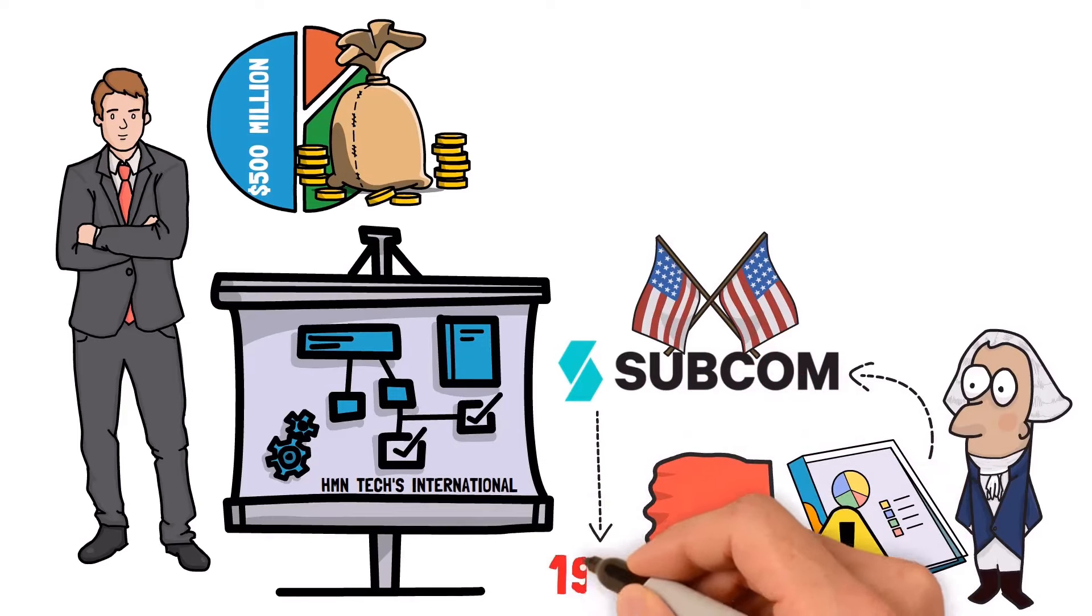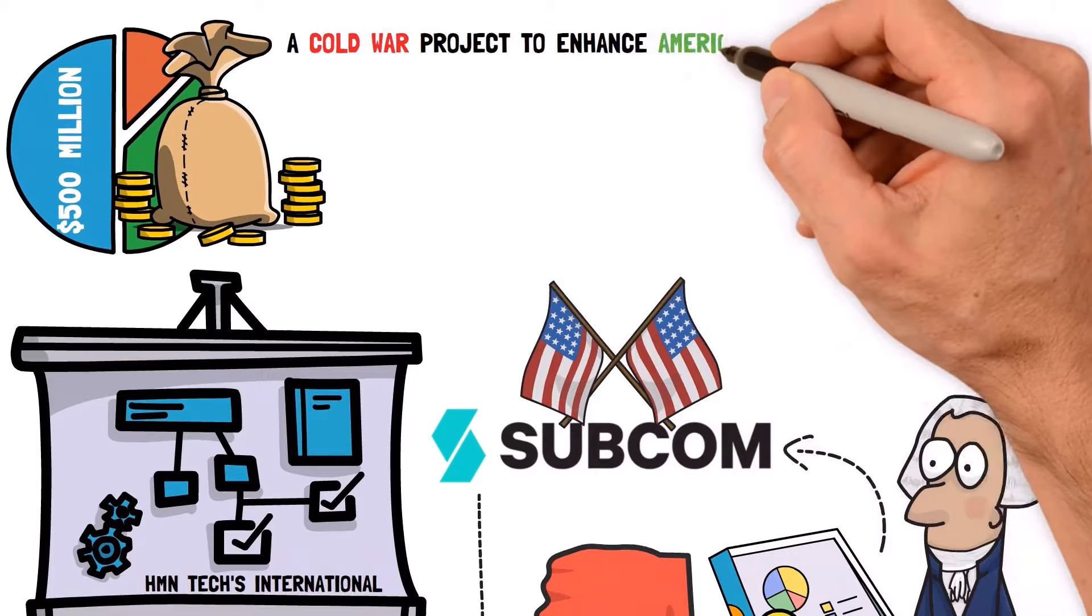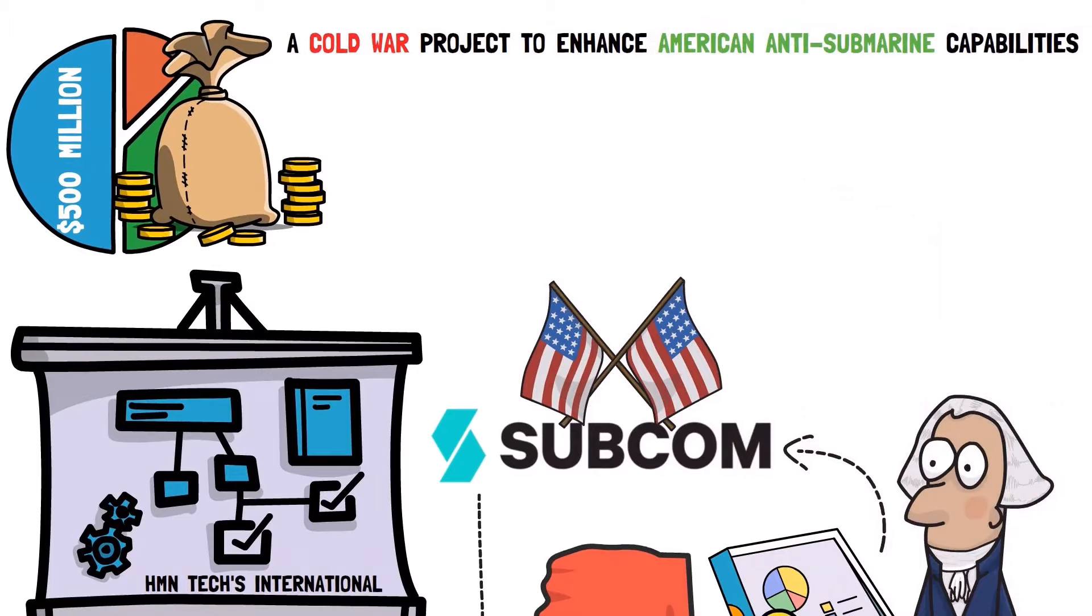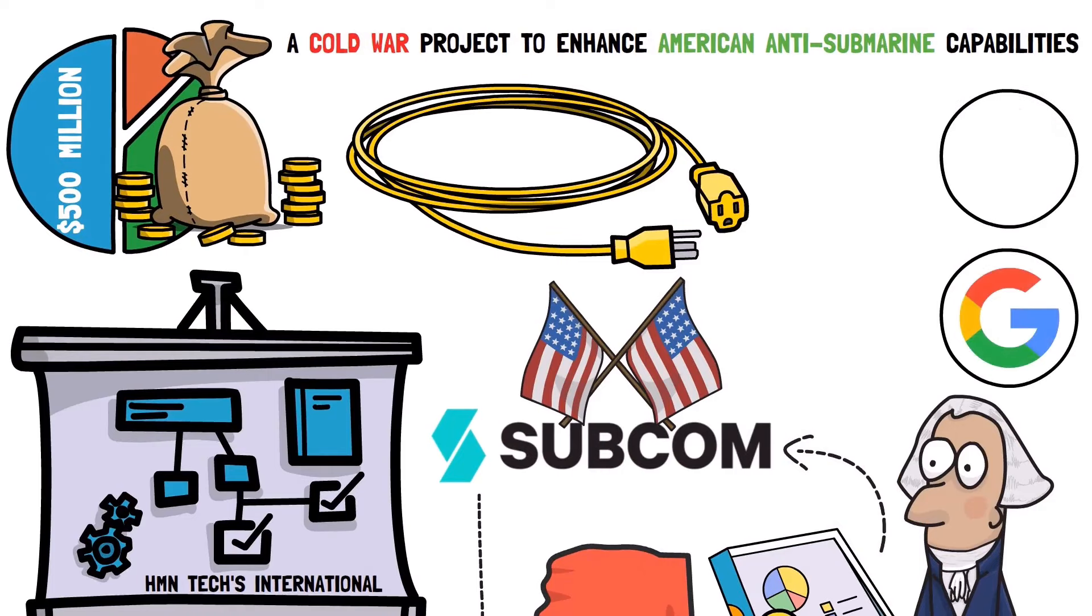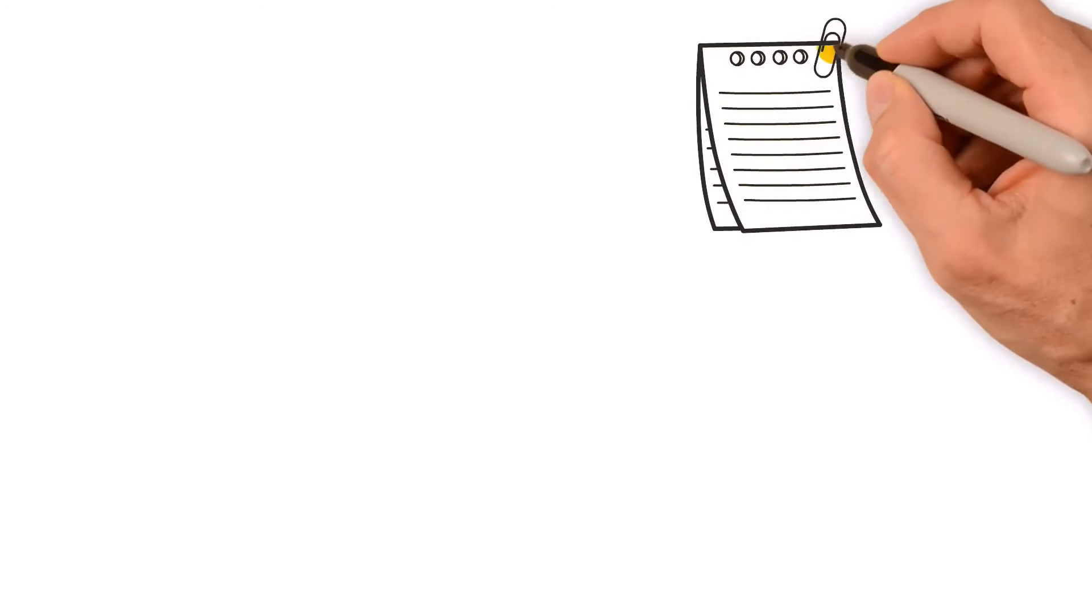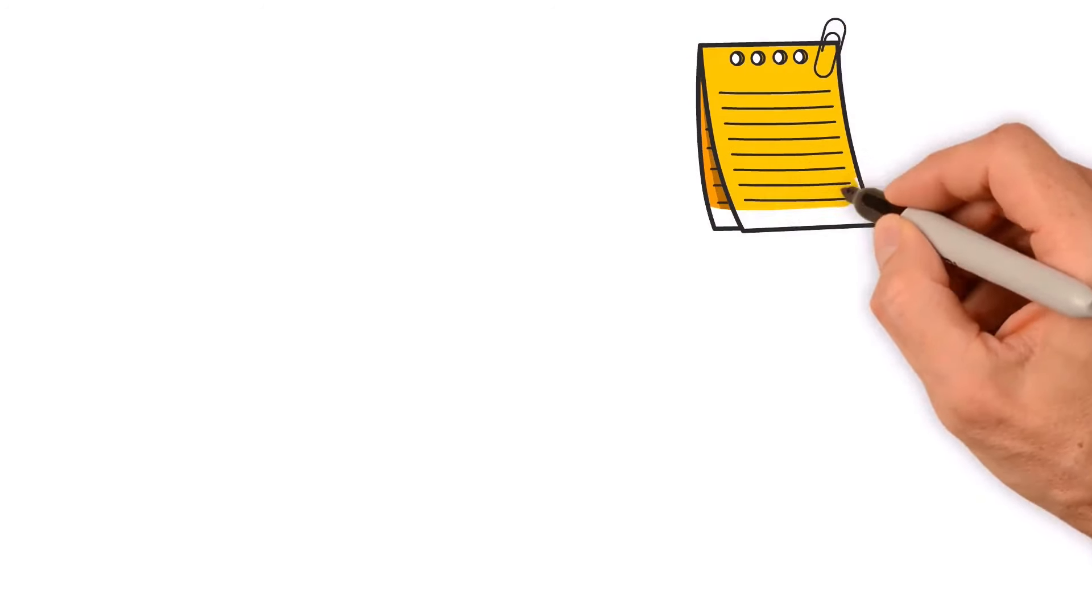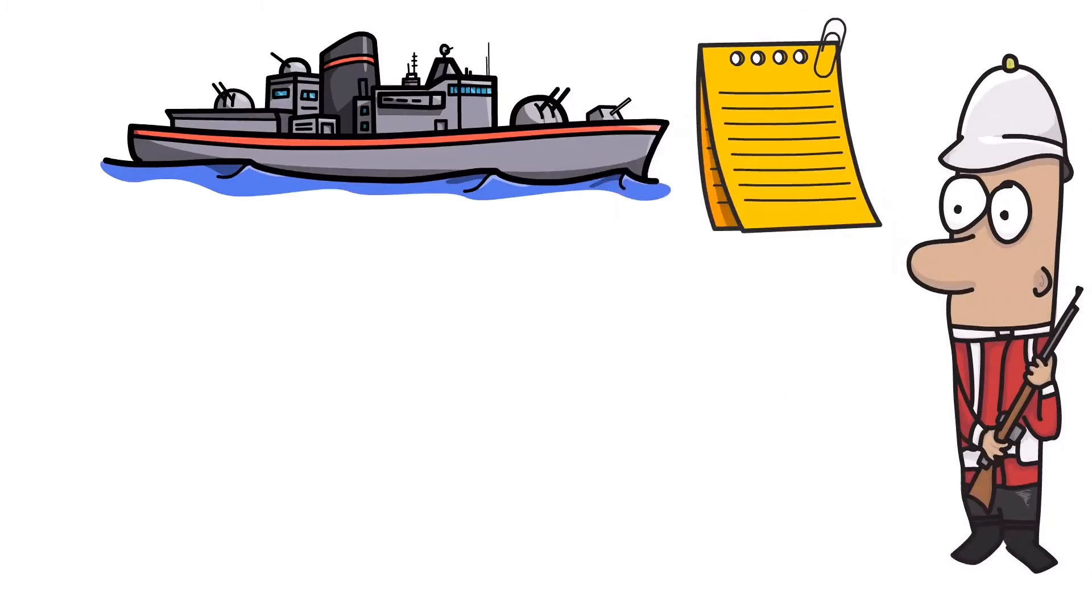Subcom itself started life in 1955 as a Cold War project to enhance American anti-submarine capabilities. Nowadays, it develops cables for companies like Google, Amazon, Microsoft and Meta Platforms. Strategically though, its most important role is as the exclusive contractor for the U.S. military, which it assists in monitoring the PLA Navy.